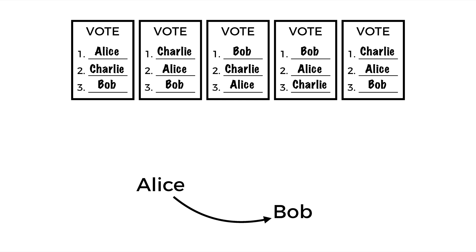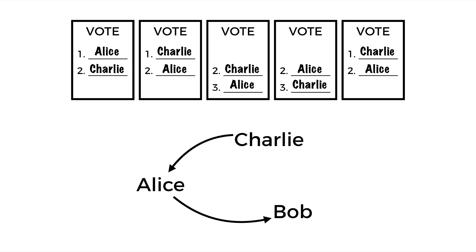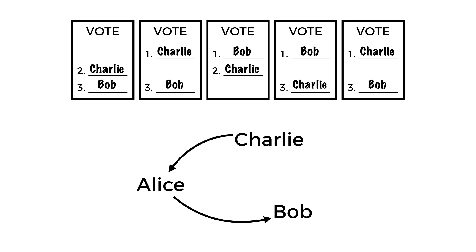Let's now consider the other pairs. Looking at Alice and Charlie: three voters thought Charlie was better than Alice, and only two thought Alice was better than Charlie. So Charlie would have beaten Alice in a head-to-head matchup, so we draw an arrow pointing from Charlie to Alice. Finally, for Charlie and Bob: three of the five voters think Charlie is better than Bob, and only two think Bob is better than Charlie, so we draw a final arrow pointing from Charlie to Bob.